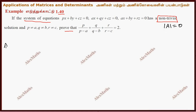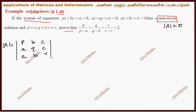So if we set the determinant equal to 0, the first equation has coefficients P, B, C; the second equation has coefficients A, Q, C; and the third equation has coefficients A, B, R. This determinant equals 0, and this is our condition.